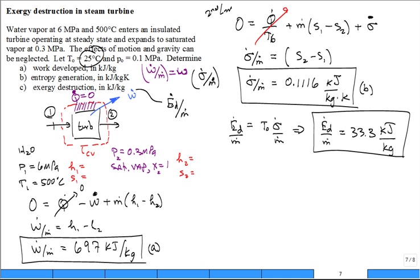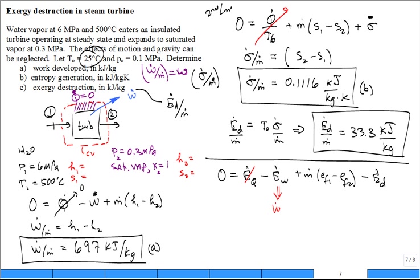Now what's another way to go about this problem? Go back to the exergy balance. Start with zero equals e dot q minus e dot w plus m dot times e f1 minus e f2 minus e dot d. What about the heat transfer? Nothing. The power out the shaft is 100% exergy transfer. It's already in the form that we wanted, it's in useful work.